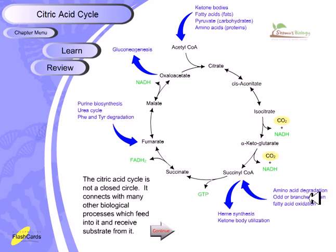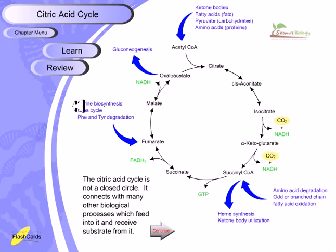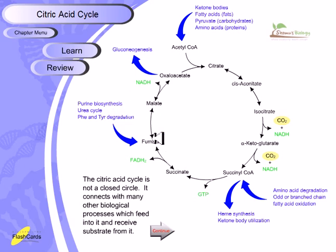Additional feeder pathways include: amino acid degradation and odd-chain or branched fatty acid oxidation, both of which can generate succinyl-CoA and thus enter the cycle at that point. Also, the urea cycle and purine biosynthesis both produce fumarate, and phenylalanine and tyrosine amino acid degradation can also lead to fumarate production — all of which can feed into the citric acid cycle.